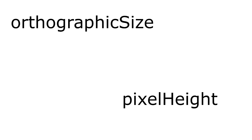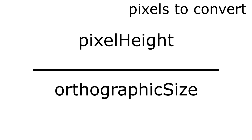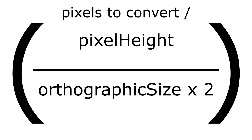So, how do we convert between the two units? Well, the camera component happens to store two values which correspond to the same screen space. These variables are the orthographic size and the pixel height. To convert, we need to divide the number of pixels we want to convert by the number of pixels in each unit. The value is the pixel height of the camera over the orthographic size multiplied by 2, as this number represents half of the screen's height.